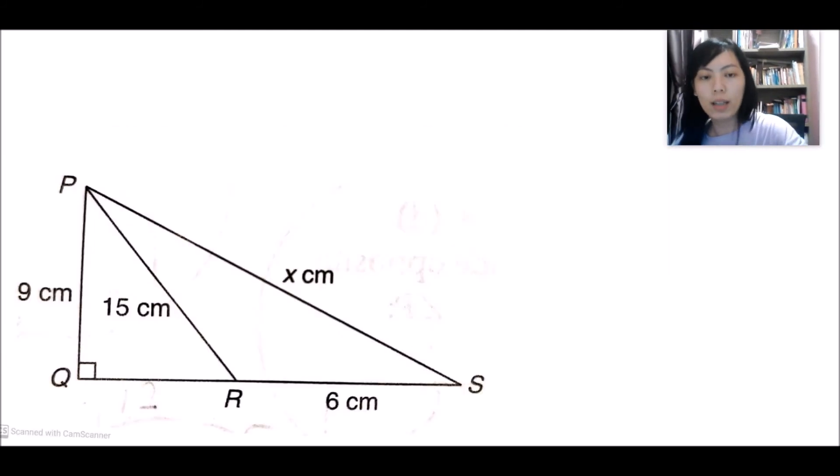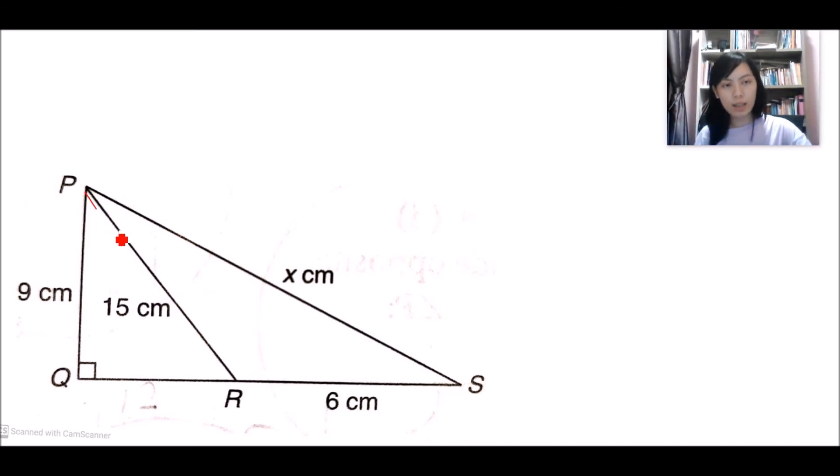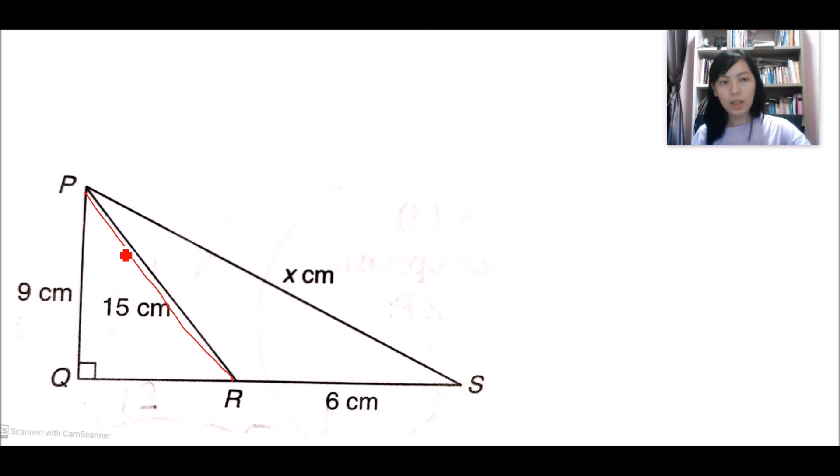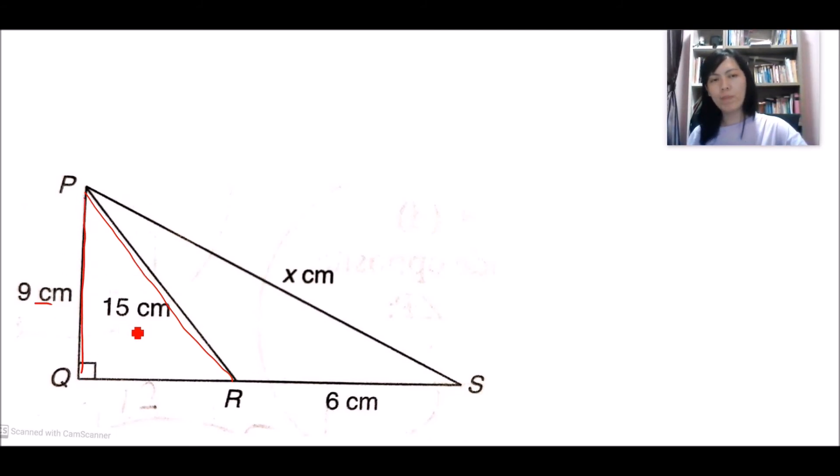Now let us look at more questions. As you can see here, this side is 15. This is the hypotenuse. And this is 9. So again, this is the hypotenuse. How do we find the length QR?